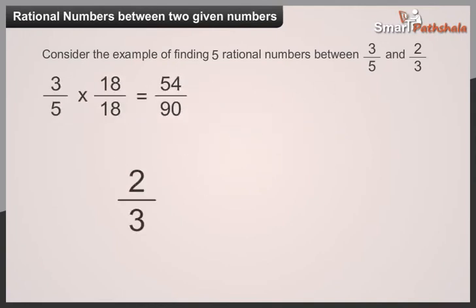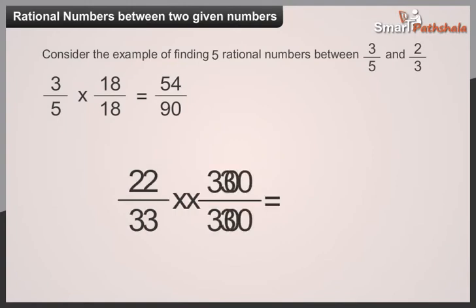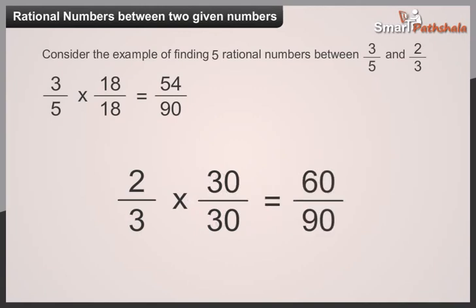In case of 2 divided by 3, multiply the numerator and denominator by 30 to get 60 divided by 90.